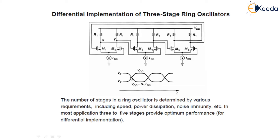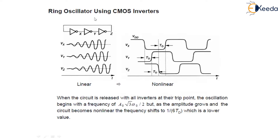These are the two common mode voltages shown — Vx and Vy — and this is the differential implementation of the three stage ring oscillator. We can also make this ring oscillator using a CMOS inverter. It will always give us the replica of the input with growth oscillations.